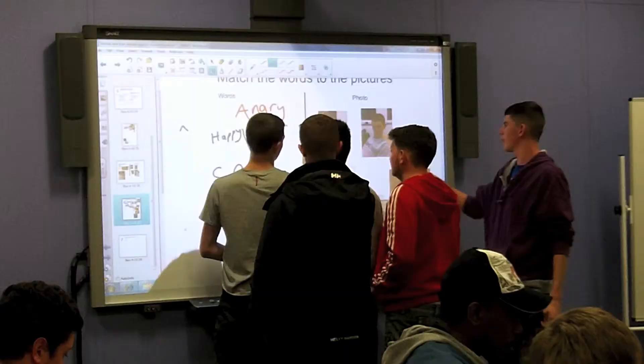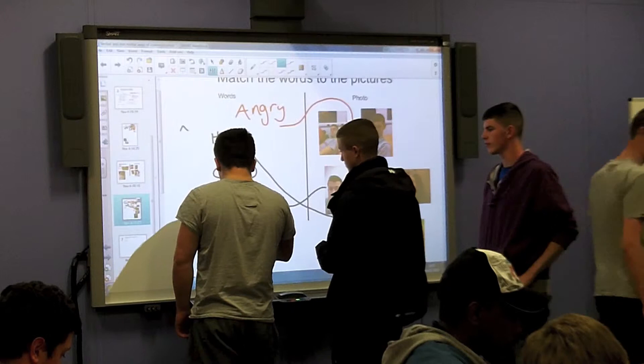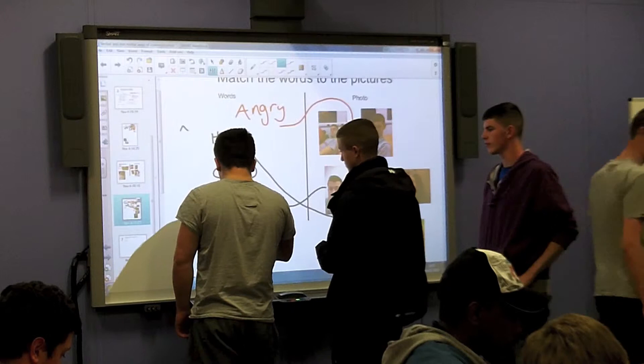As a conclusion to the lesson, once they were able to identify positive and negative emotions, the learners were asked to match emotion words to facial expressions. The learners approached the Smart Board and matched the words to the images they had previously posted. This allowed for final assessment to take place.